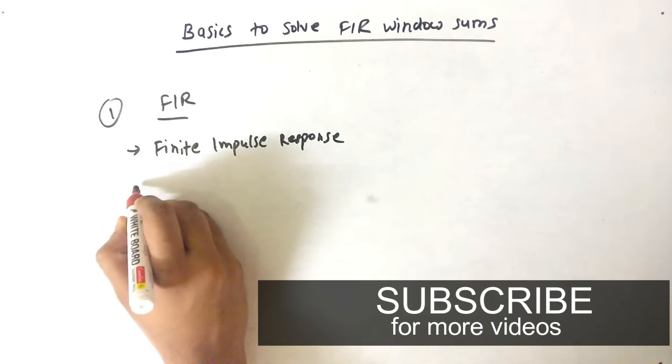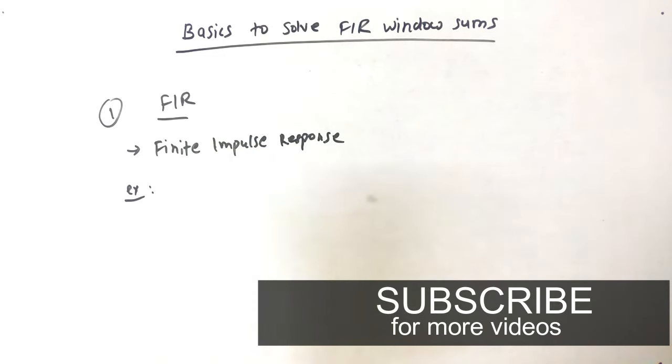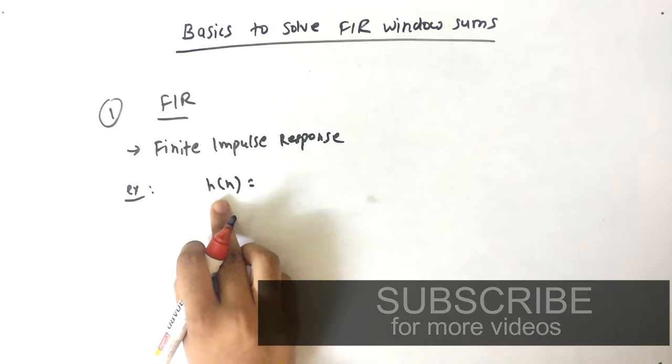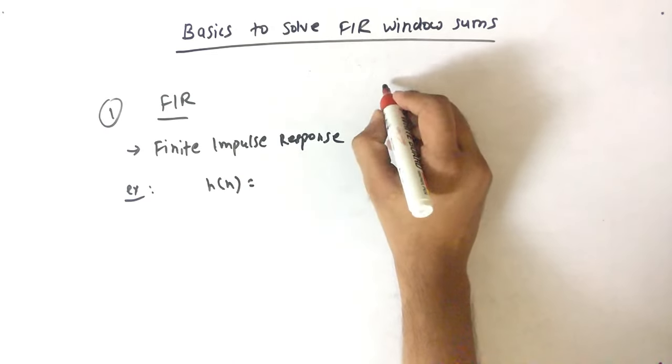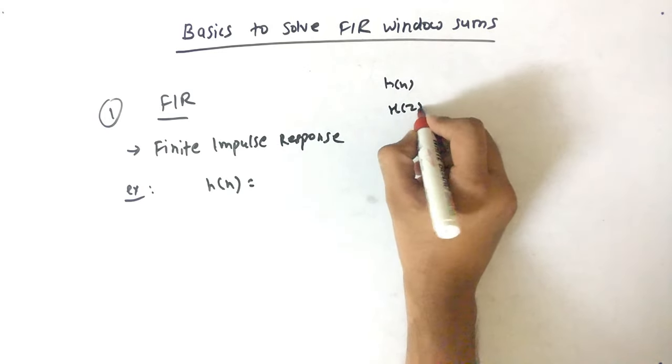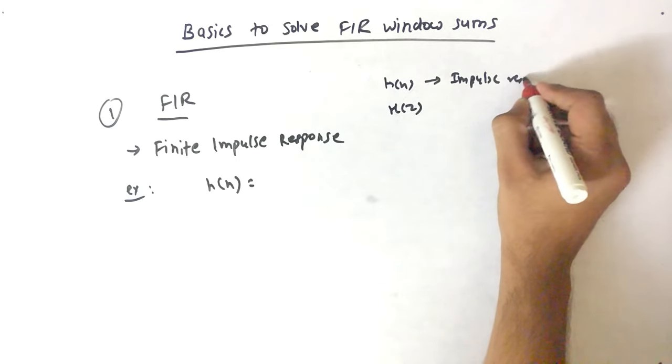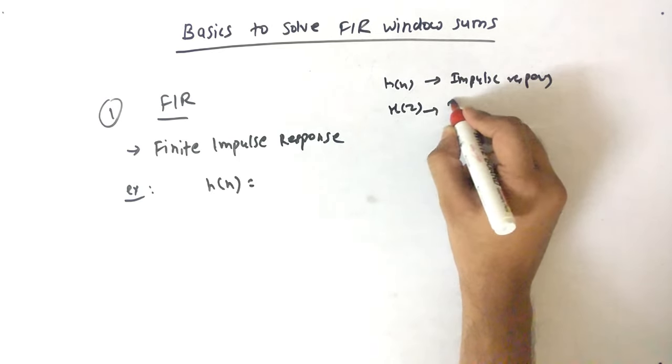Let's take an example. If we take H of N, there are basically two terms: H of N and H of Z. H of N means Impulse Response, H of Z means Transfer Function.